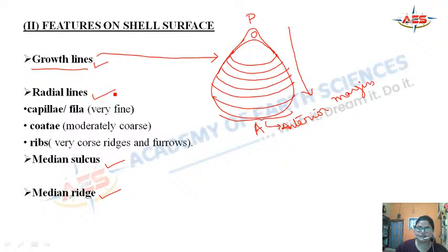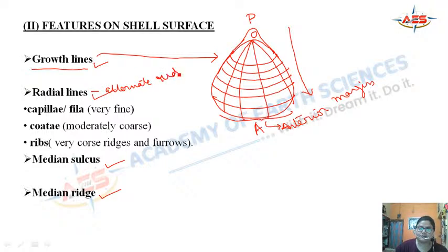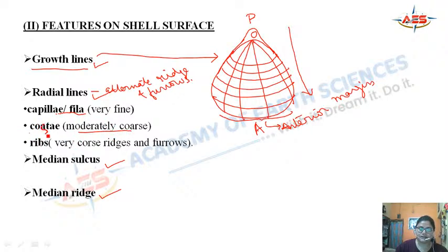Radial lines are alternate ridges and furrows that start from the umbonal area and migrate towards the anterior margin. They are of three types: when very fine, they are called capillae or phila; when moderately coarse, they are called costae; and when very coarse ridges and furrows, they are called ribs.